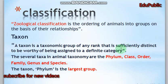A taxon is a taxonomic group of any rank that is sufficiently distinct to be worthy of being assigned to a definite category. There are several taxa in animal taxonomy: phylum, class, order, family, genus, and species. The largest group among these taxa is the phylum.